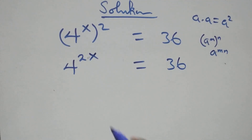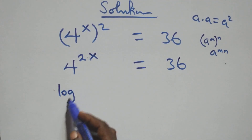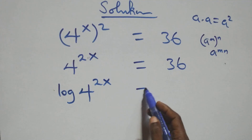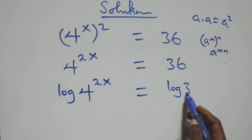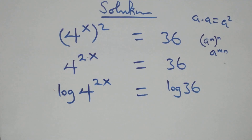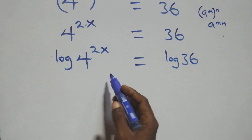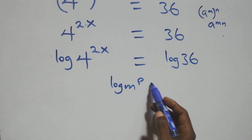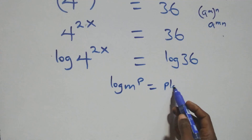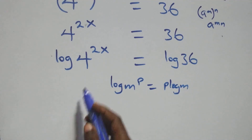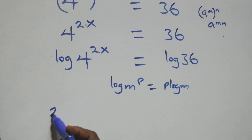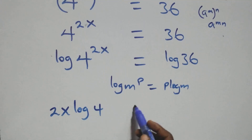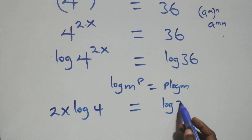Next step: take the log on both sides. We have log of 4 raised to power 2x equals log 36. On this side we apply the power rule of logs, where log of m raised to power p is the same thing as p·log m. So this becomes 2x·log 4 equals log 36.